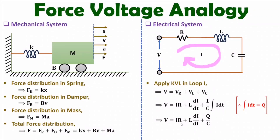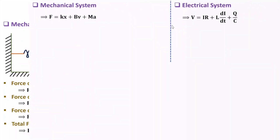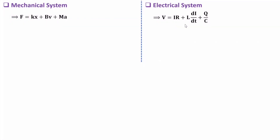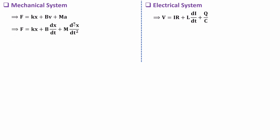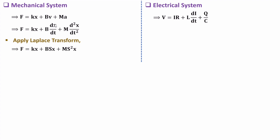Now we have these two equations, and by comparing them we can identify the analogy between force and voltage for the mechanical and electrical systems. Let me convert both equations into the Laplace domain. For the mechanical system, velocity is dx/dt and acceleration is d²x/dt². Applying Laplace transform with zero initial conditions, single differentiation becomes s·x and double differentiation becomes s²·x.